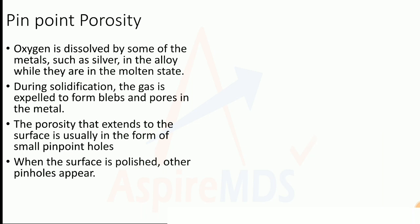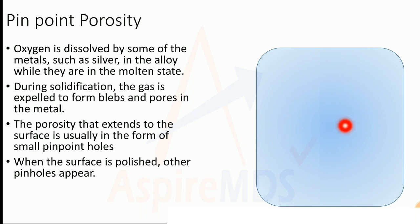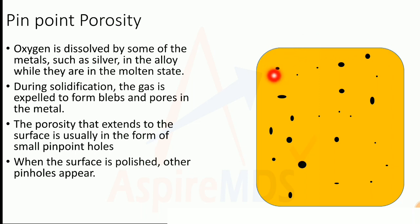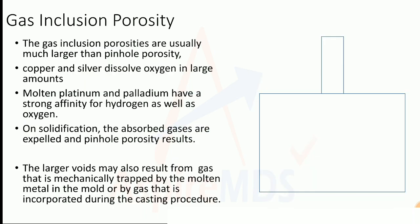Pinpoint porosity occurs because certain metals such as silver dissolve oxygen when molten. On solidifying, this gas is expelled and remains trapped within the metal. When these pores reach the surface, porosity becomes visible, especially when polishing the metal.